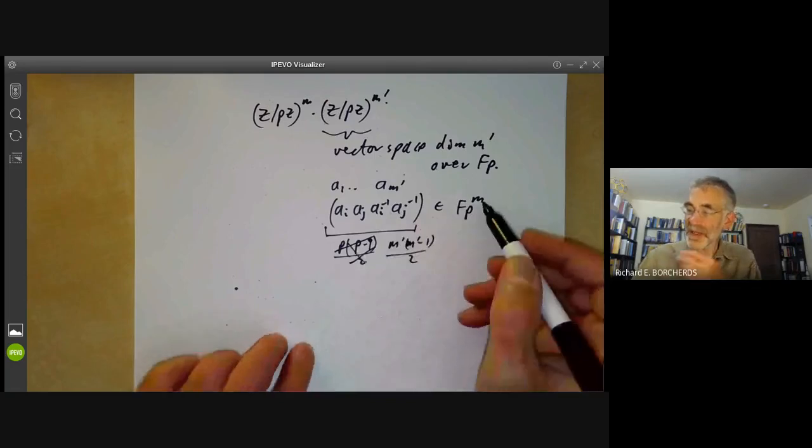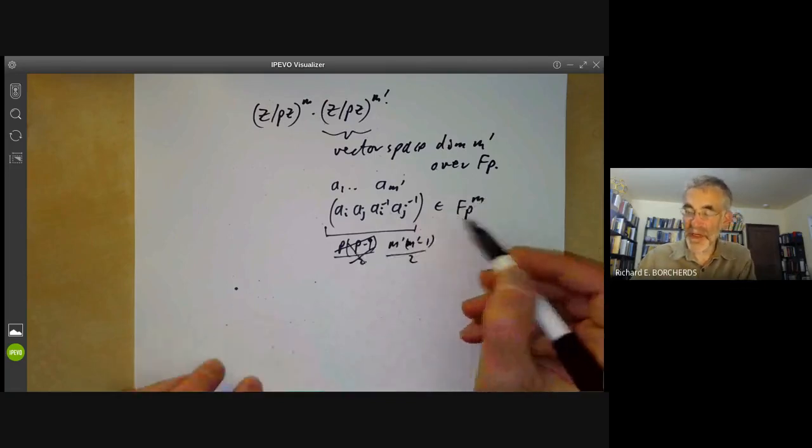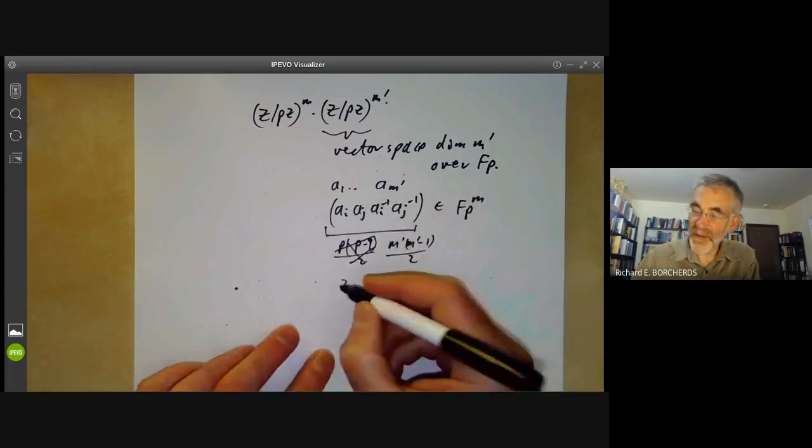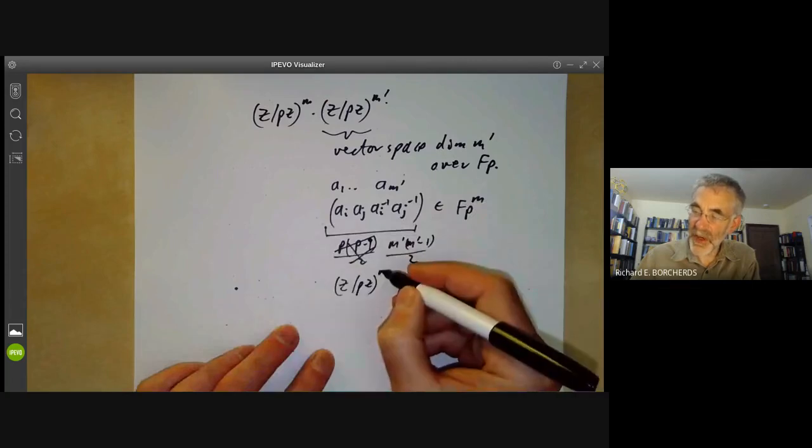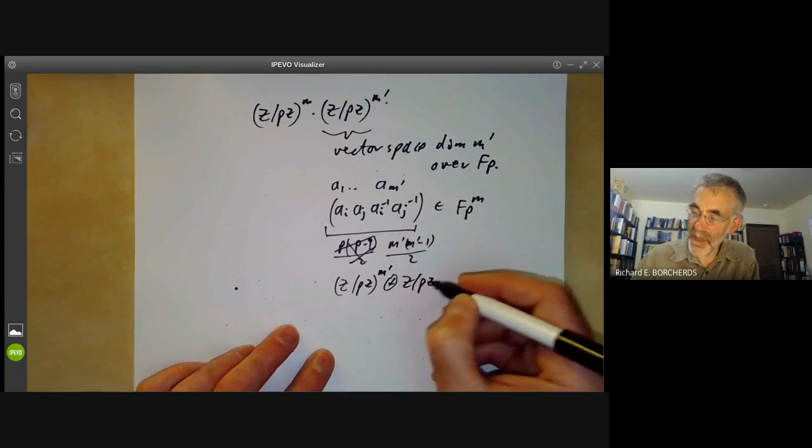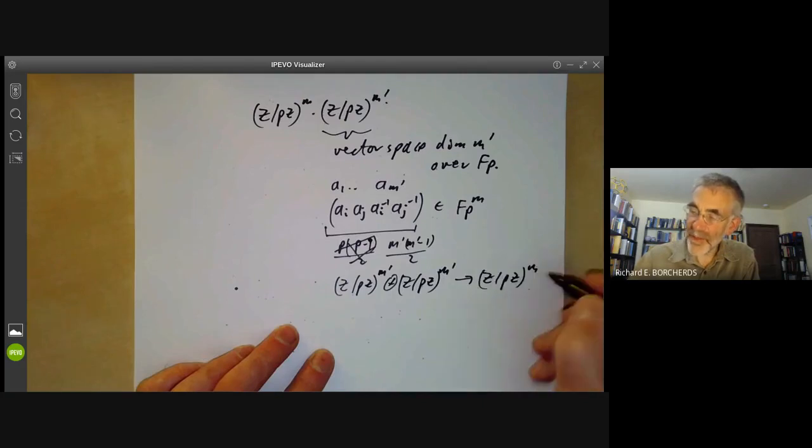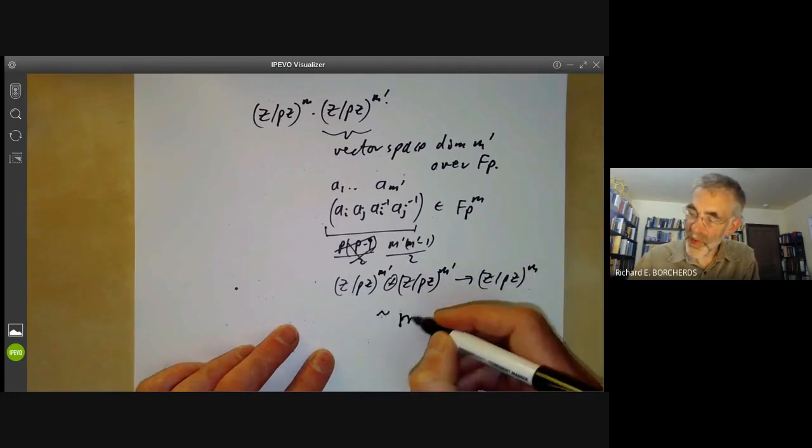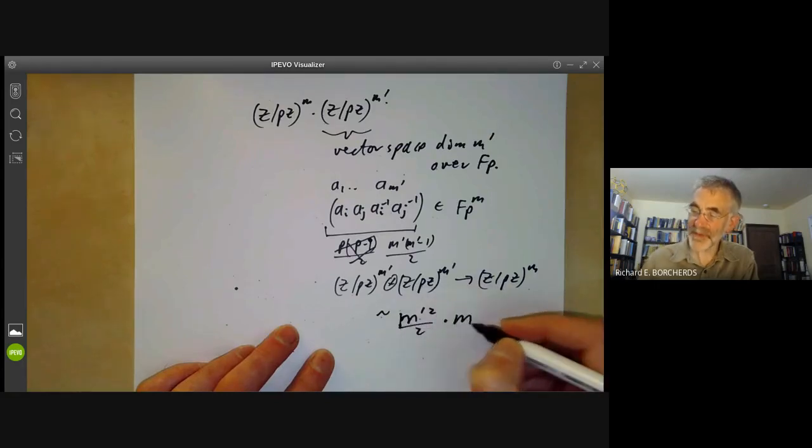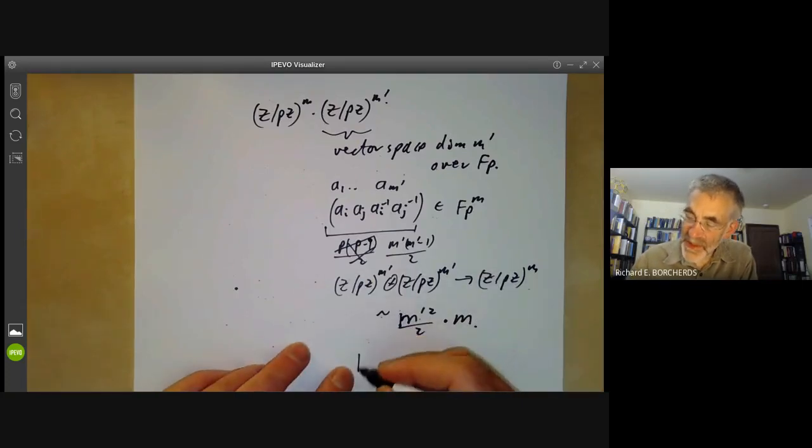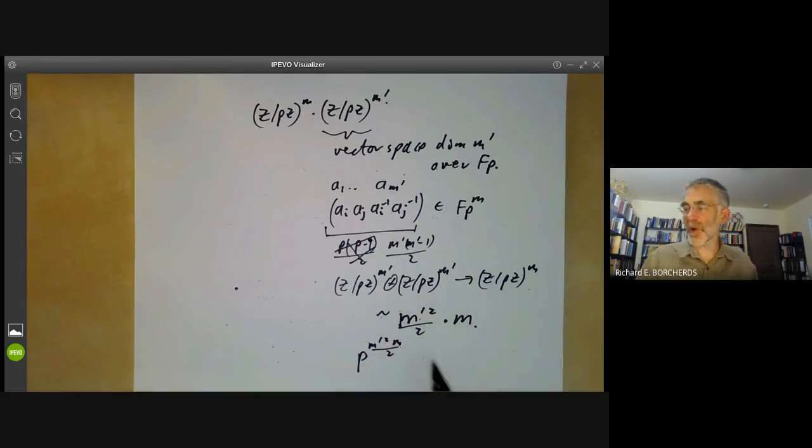And for each of these, we have an m-dimensional vector space of things we can choose. So the dimension of all the bilinear maps from Z over pZ to the m prime times Z over pZ to the m prime to Z over pZ to the m is about m prime squared over 2 times m. Altogether, the vector space of all these maps has size about p to the m prime squared times m over 2. Here we're not worrying about this m prime minus one, we're just giving very rough estimates for the size of everything.